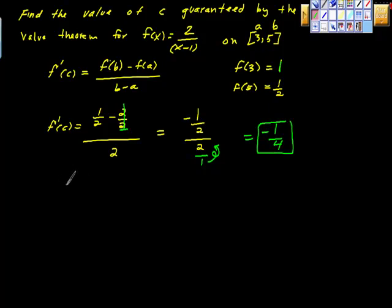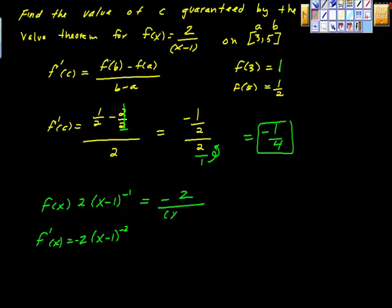Now I'm going to differentiate this really quickly. f(x) = 2/(x-1), that's the same as (x-1) to the negative first power. If we differentiate, we get -1 times 2 is -2. Decrement this, it becomes 2. So f'(x) = -2(x-1)^(-2), or -2/(x-1)².